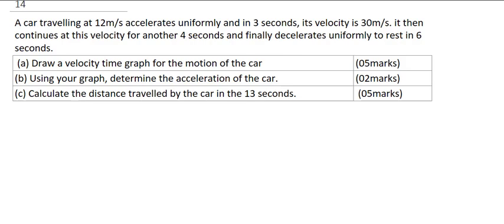Question 14 says: a car traveling at 12 meters per second accelerates uniformly and in 3 seconds its velocity is 30 meters per second. It then continues at this velocity for another 4 seconds and finally decelerates uniformly to rest in 6 seconds.